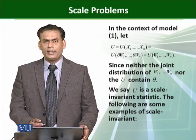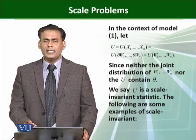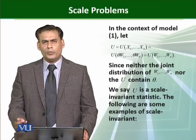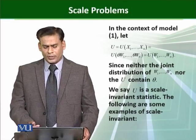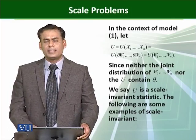Then we say it is an ancillary statistic. Since neither the joint distribution of W1, W2, ..., Wn nor U contains θ, we say U is a scale-invariant statistic.